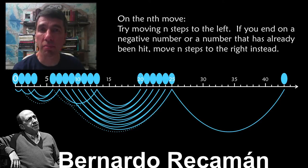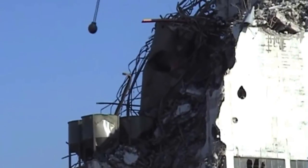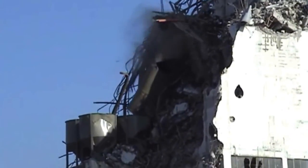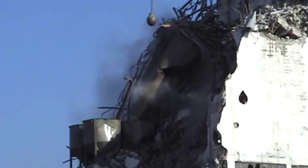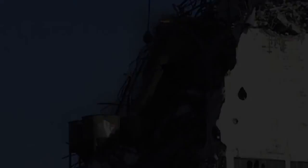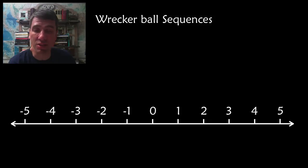Older students who are learning both positive and negative integers definitely need a Recamán sequence that goes into the negative integers as well. I imagine that Bernardo Recamán, in his dreams, has always wanted to be a wrecker ball. Here you can start at any integer. So we're going to start at two, and you're always trying to jump over zero, or to move in the direction of zero if you can.